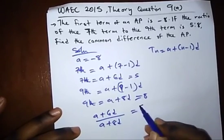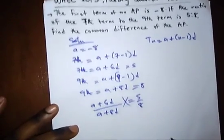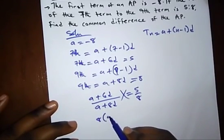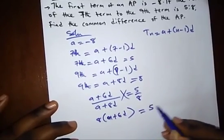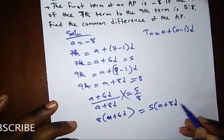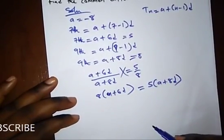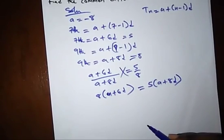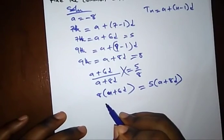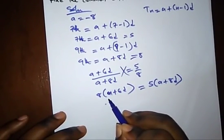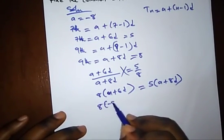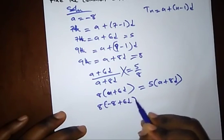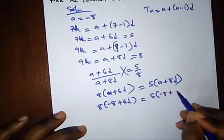Cross multiplying, we get 8(a + 6d) = 5(a + 8d). Since a = -8, we substitute: 8(-8 + 6d) = 5(-8 + 8d).